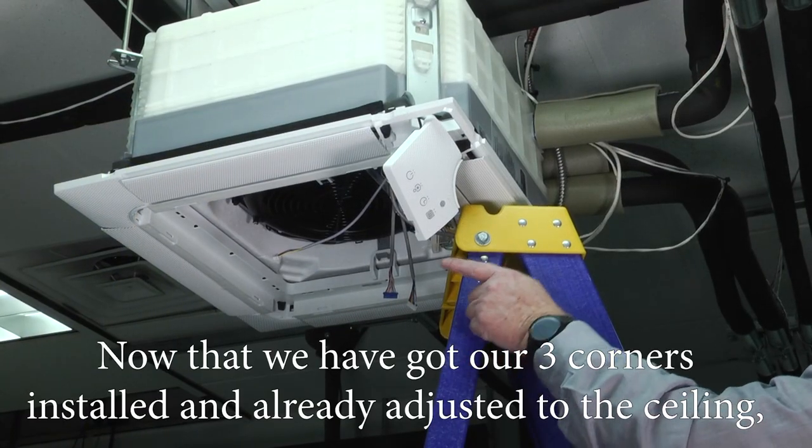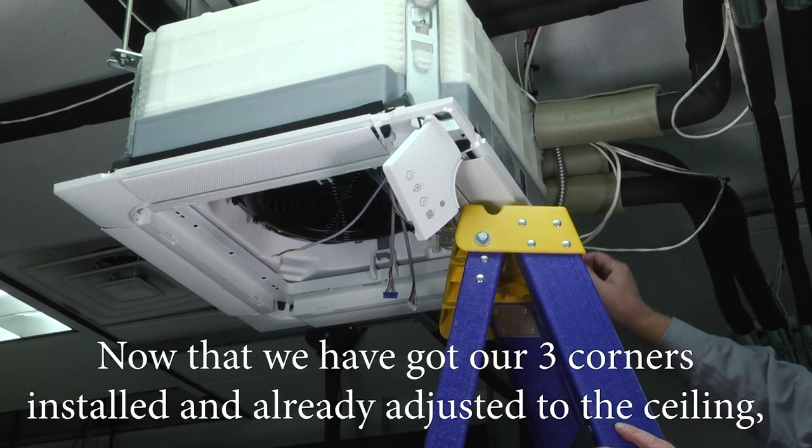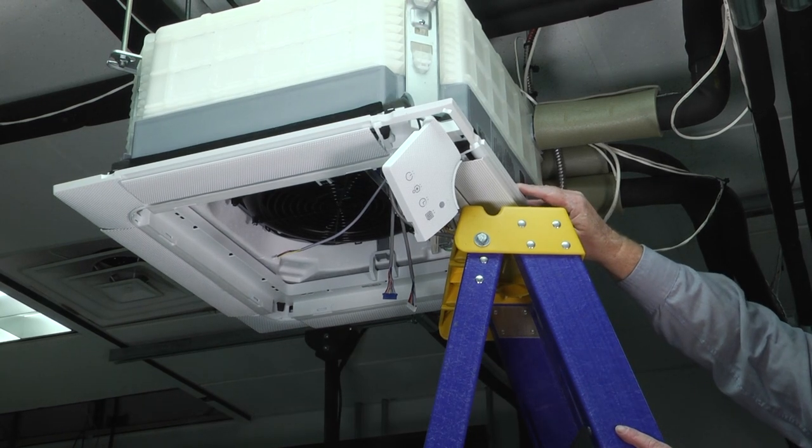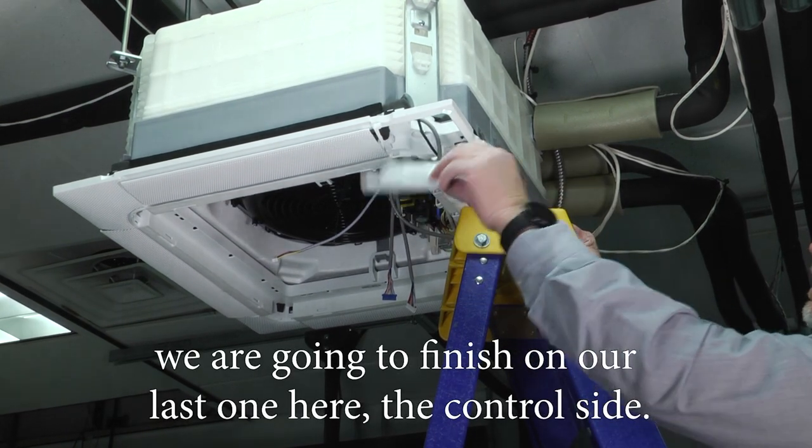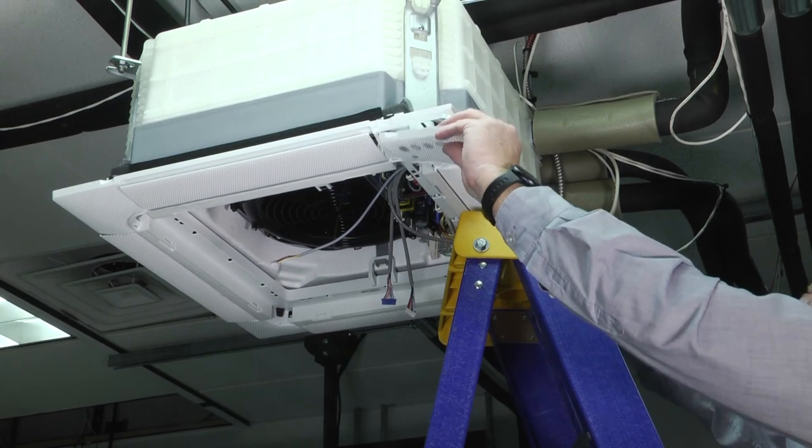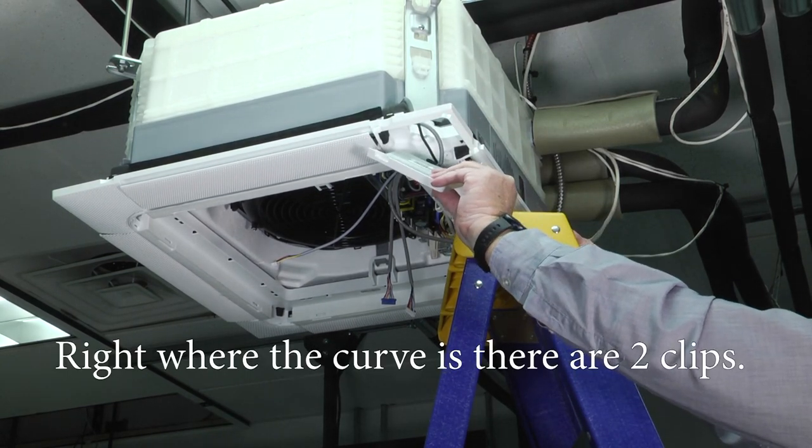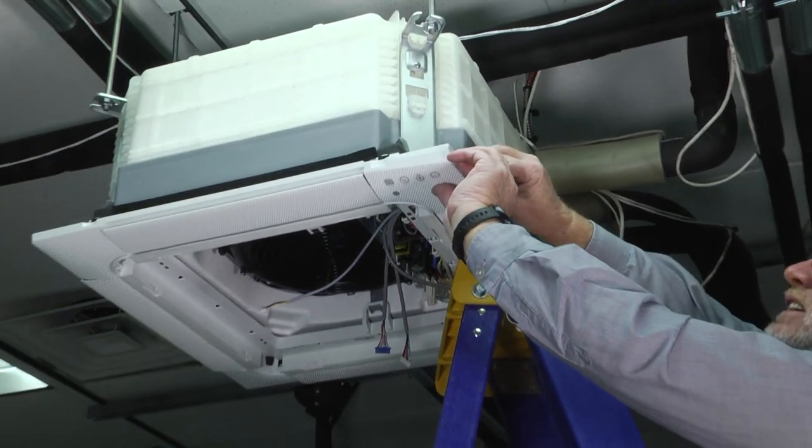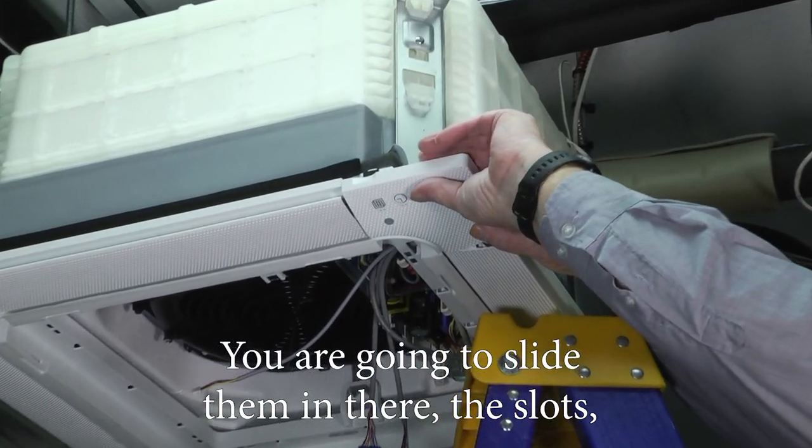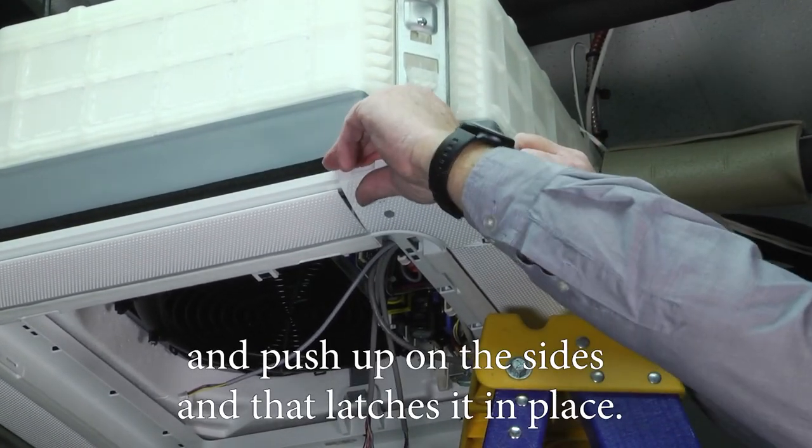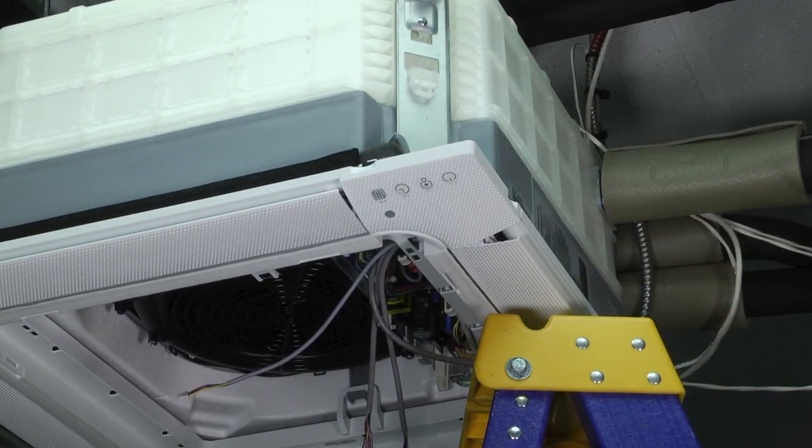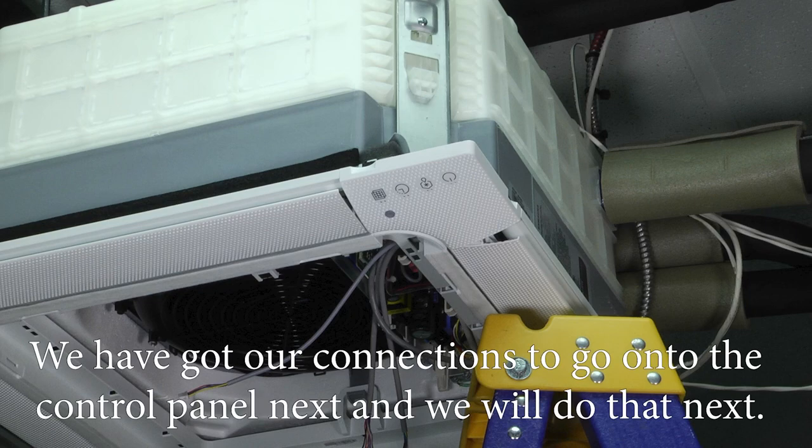Now that we've got our three corners installed and already adjusted to the ceiling, we're going to finish on our last one here, the control side. Right where the curve is, there's two clips. You're going to slide them in there in the slots and push up on the sides and that latches it in place. We got our connections to go on to the control panel next and we'll do that next.